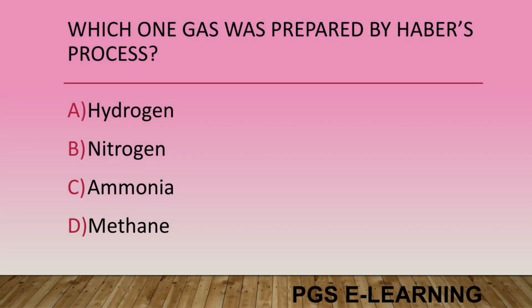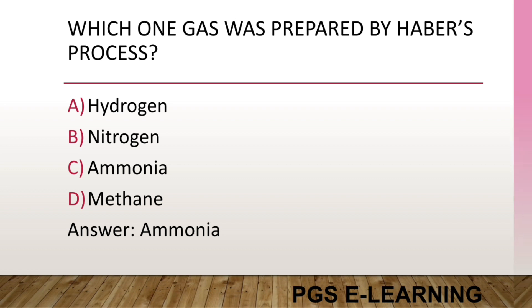Which gas is prepared by Haber's process? Option A, hydrogen. Option B, nitrogen. Option C, ammonia. Option D, methane. Correct answer is ammonia.